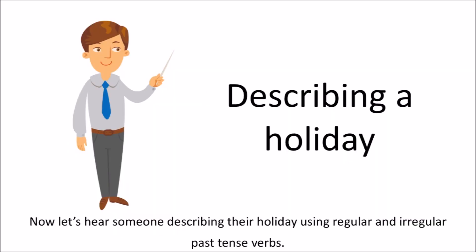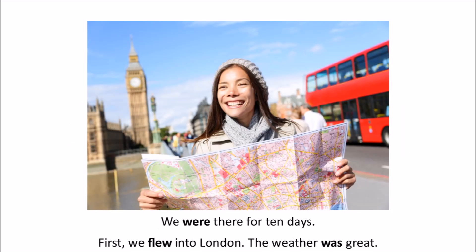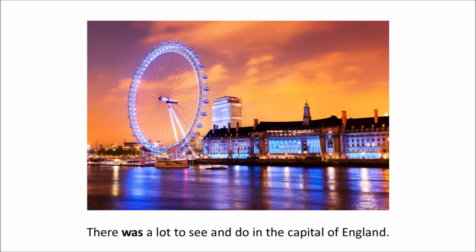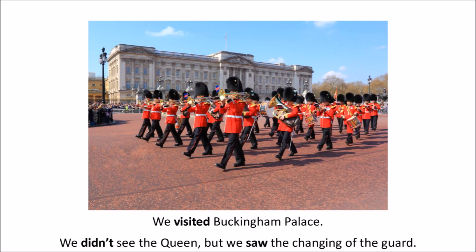Now let's hear someone describing their holiday using regular and irregular past tense verbs. I went to England and France on holiday last summer. I went with my boyfriend, Simon. We were there for ten days. First we flew into London. The weather was great. There was lots to see and do in the capital of England. We visited Buckingham Palace. We didn't see the Queen, but we saw the changing of the guard.